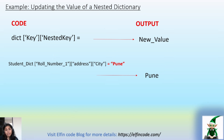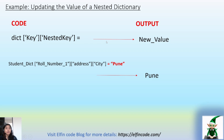Now let's see how to update the values of a nested dictionary in such a scenario. The generic syntax is: dictionary[key][nested_key] = value. Basically, you have to traverse the keys down to the position where you need to update the value.